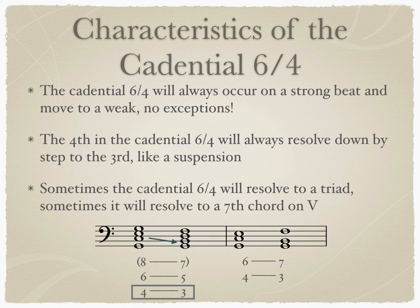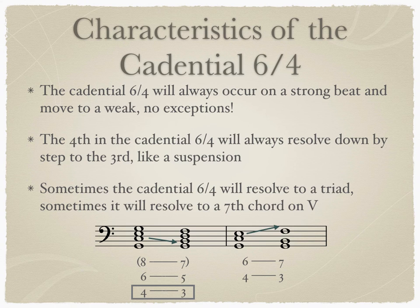The 4th acts as a suspension, which must be treated carefully because it's a dissonance. The 6th of a cadential 6-4 does not have such strict movement criteria and instead may move to the 5th or to the 7th of the chord. A cadential 6-4 has two common ending chords: that of the triad on 5, which we've seen, or the 7th chord on 5. Both occur frequently in tonal music.